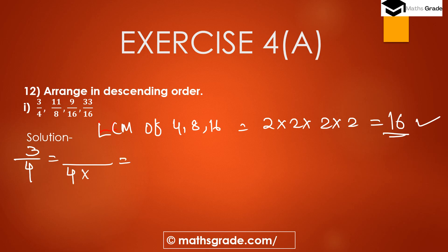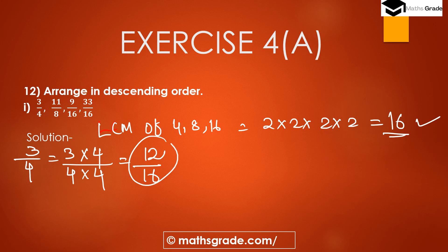The LCM of 4, 8, and 16 is 16. Now we have to convert these rational numbers into equivalent rational numbers. We have to find the number which we multiply with denominator 4 to get 16. If we multiply 4 with 4, we get 16. So we multiply the numerator 3 by 4 as well: 3 times 4 is 12. So 12 divided by 16 is the equivalent rational number of 3 by 4.